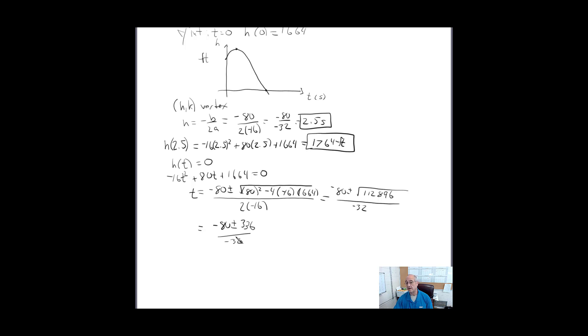Now, notice here, if we add the 336 to negative 80 and then divide by a negative, we're going to get a negative number, which is not possible, right? Since our time, we're going forward in time. So we're going to make this equal to negative 80 minus 336 divided by negative 32, and that gives us 13, which is seconds.